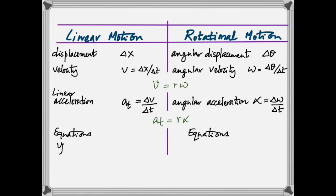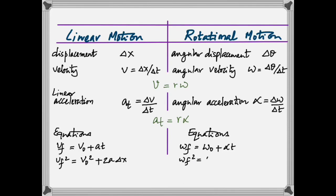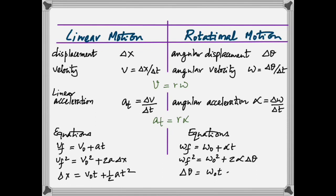Now for kinematic equations: the linear kinematic equations can be rewritten in rotational form by replacing v with omega and a with alpha. There are three such equations. If you know the equations in linear motion, you can pretty much derive the corresponding equations in rotational motion.